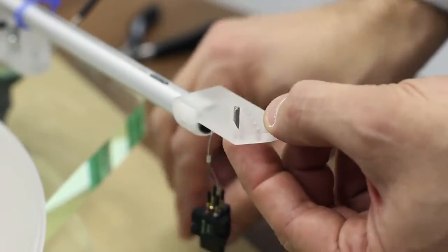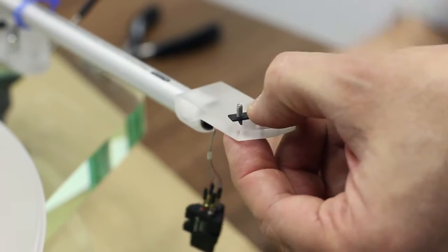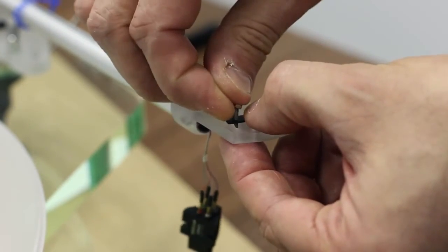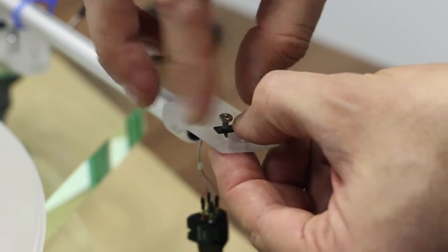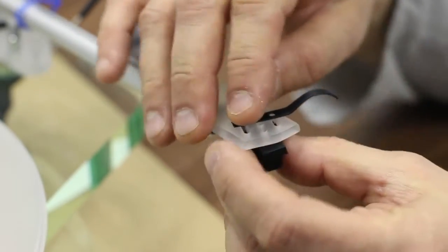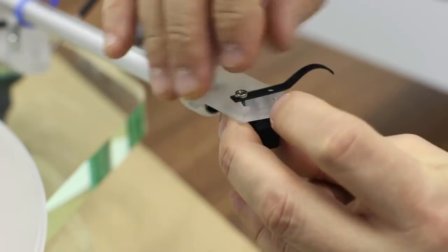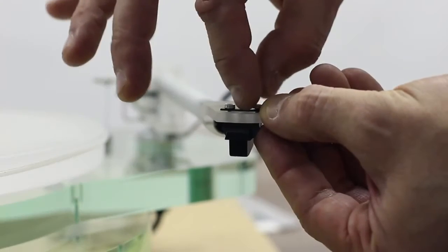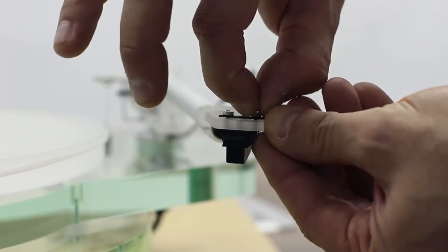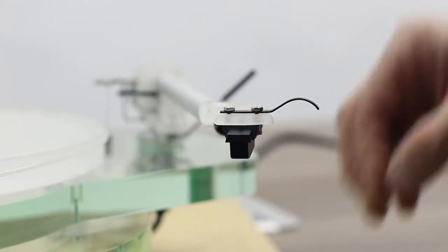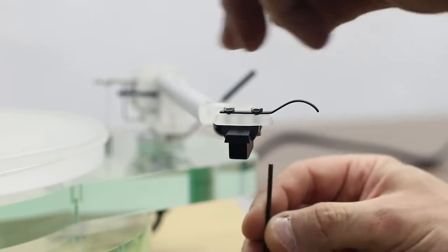Mount the cartridge onto the head shell of the tonearm using the nuts and bolts provided and tighten with a 2mm Allen key.